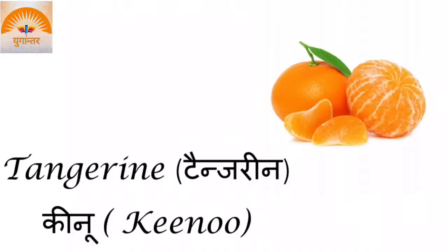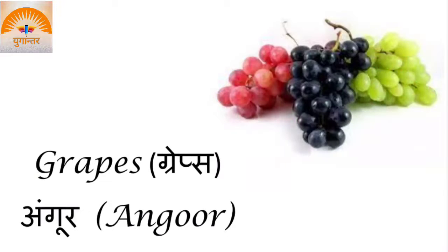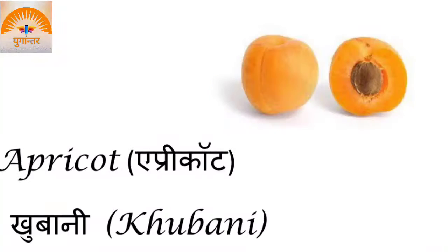Tangerine — Kino. Kino. Grapes — Angoor. Angoor. Apricot — Khobani. Khobani.